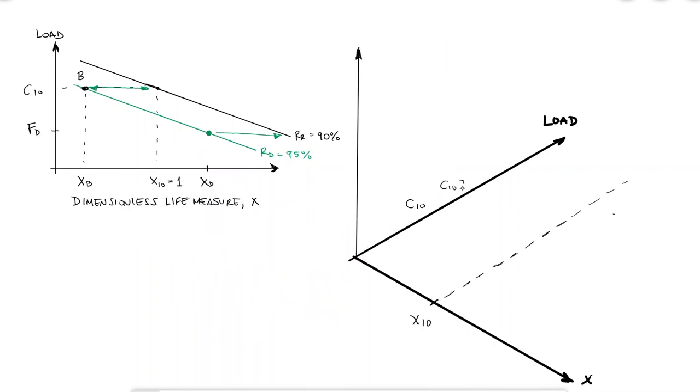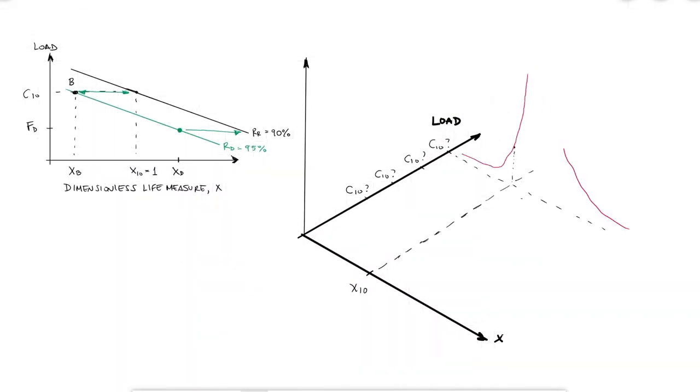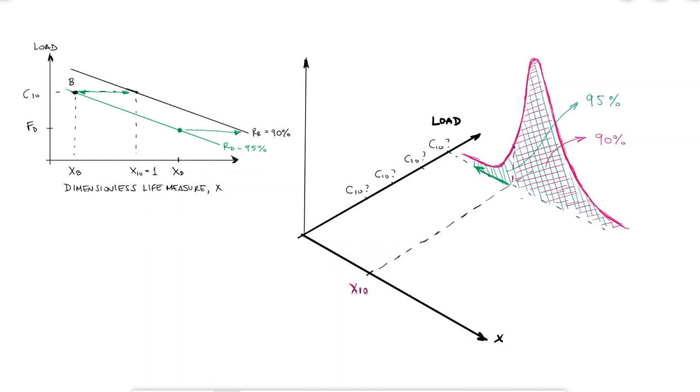We don't know where C10 is. That is exactly what we're trying to find, the catalog load rating. But wherever it is, I can move from X10, which is a 90% reliability, so that the new area under the curve is 95%. Using the reliability equation and finding X for 95% reliability, or whatever other value I want.